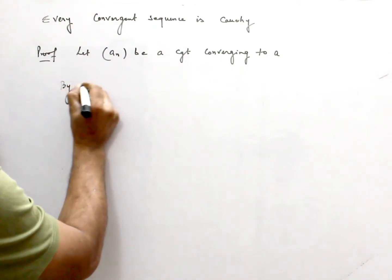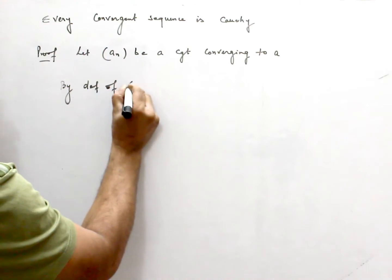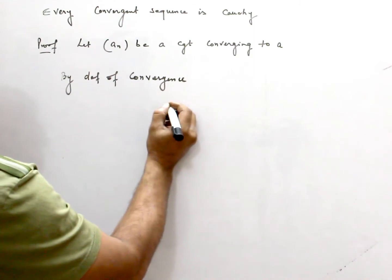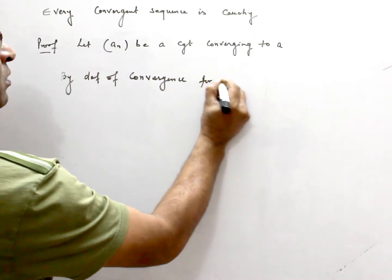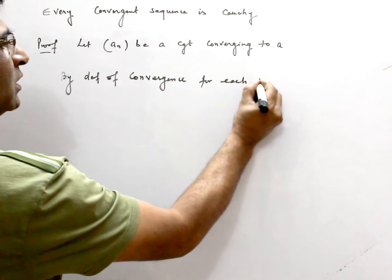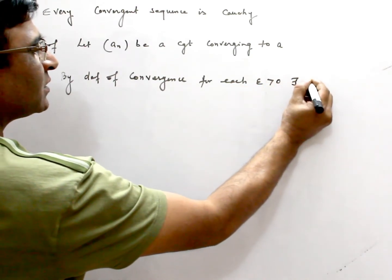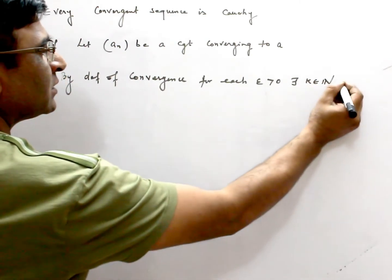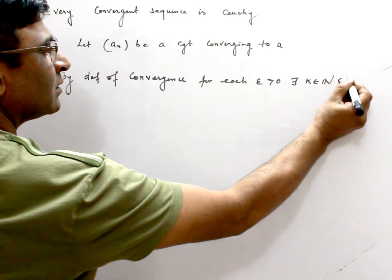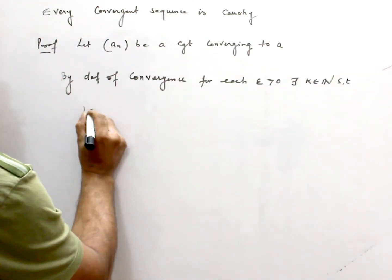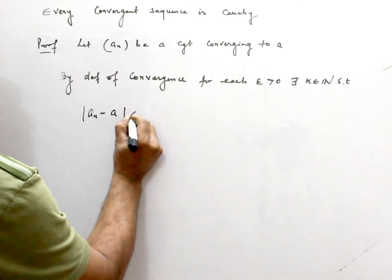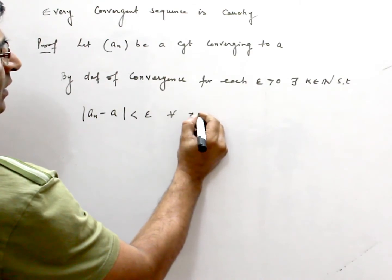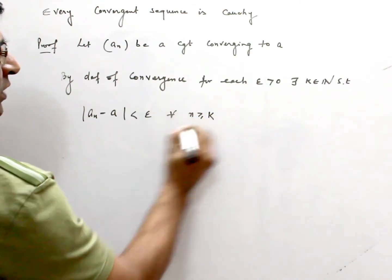By definition of convergence, for each epsilon positive, there exists some K in natural numbers such that |An - A| < ε for all N ≥ K.